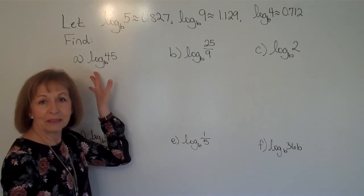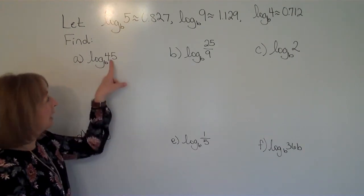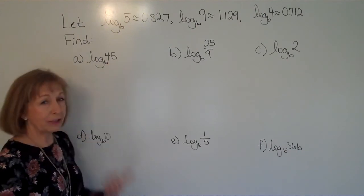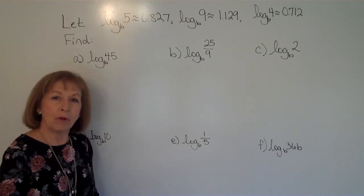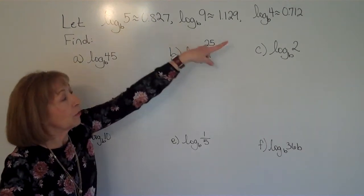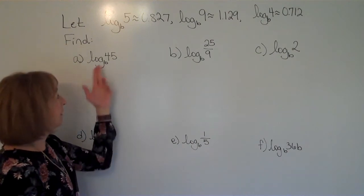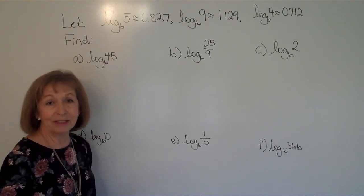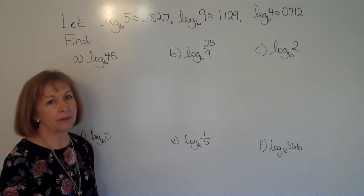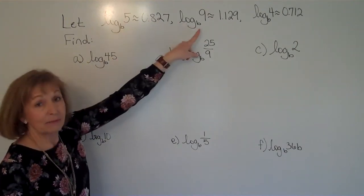The first one is log base b of 45. Well, log base b of 45, when I look at 45, I try to think, is there a multiplication, division, or powers of the numbers that I know the logarithms of for that particular base that would create the value 45? Because our properties of logarithms will deal with that. Well, 45 is 5 times 9.